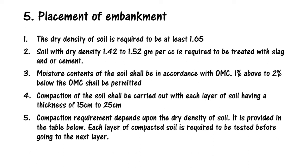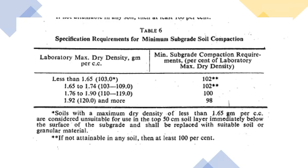As shown in the table, the maximum dry density of 1.65 g/cc has a minimum standard compaction requirement defined. As the dry density goes up, the compaction requirement gets lower.